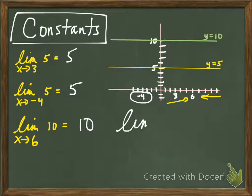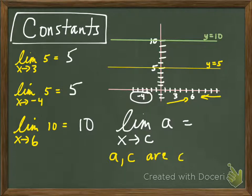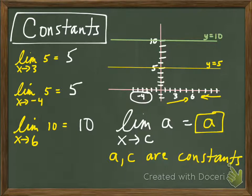Let's make that rule. The limit as x approaches c of a, where a and c are both constants, so the limit as x approaches c of a is equal to just a. If you take the limit of a constant, all you get is a constant. That's pretty exciting.